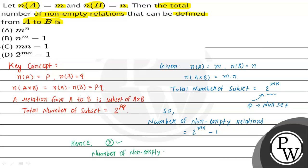The number of non-empty relations equals 2^(mn) - 1, and this is the final answer. Option D is correct. I hope you understood the solution. Thank you.